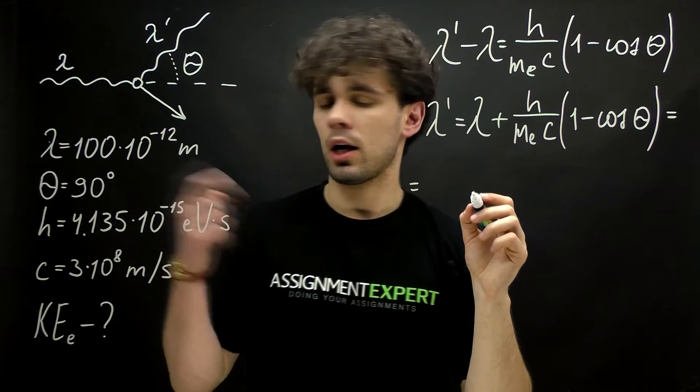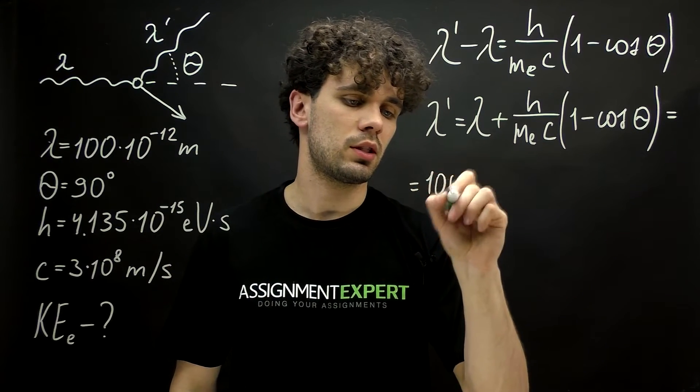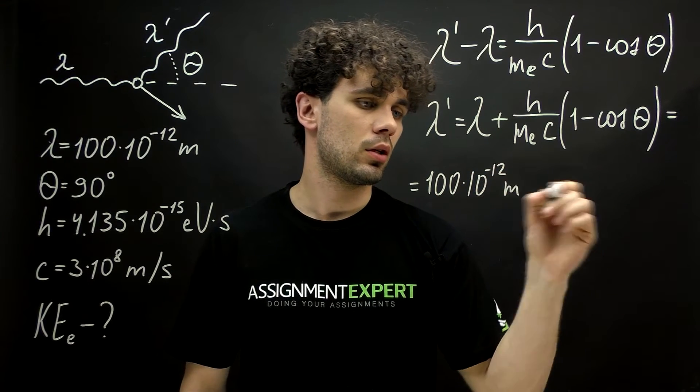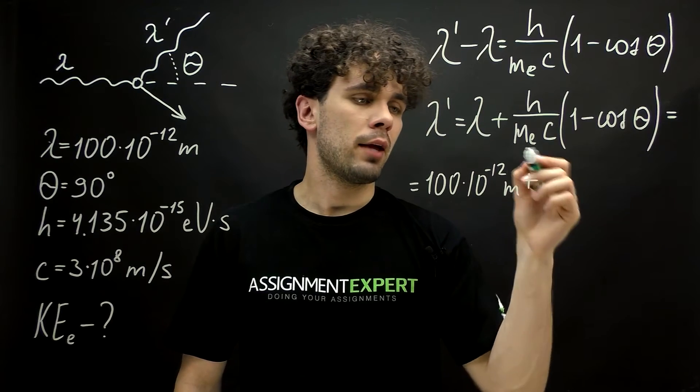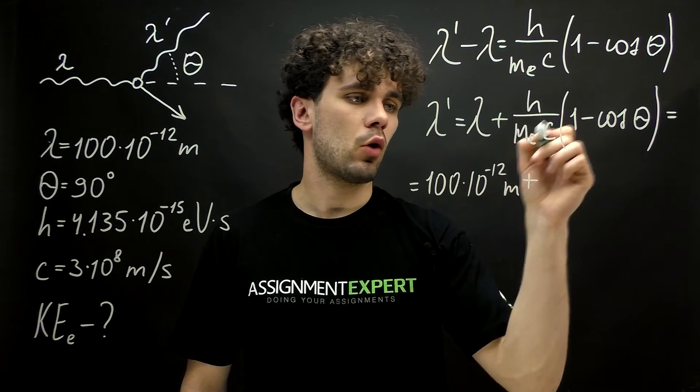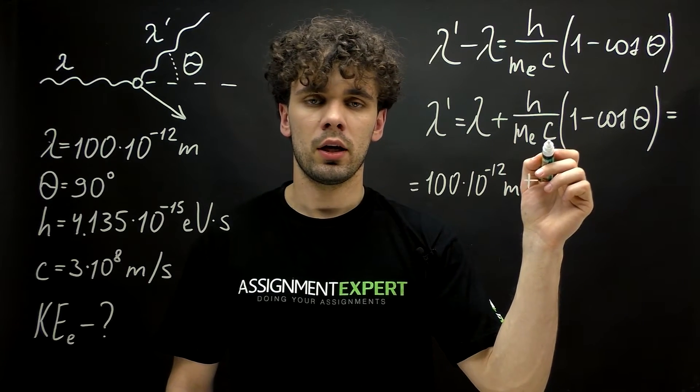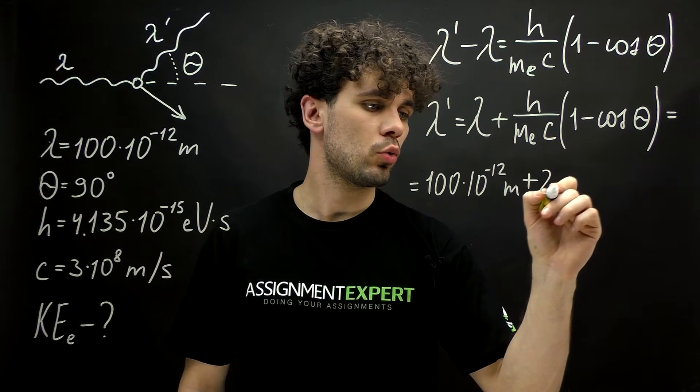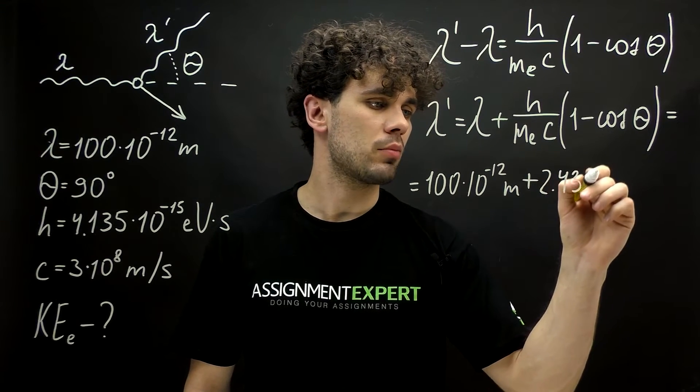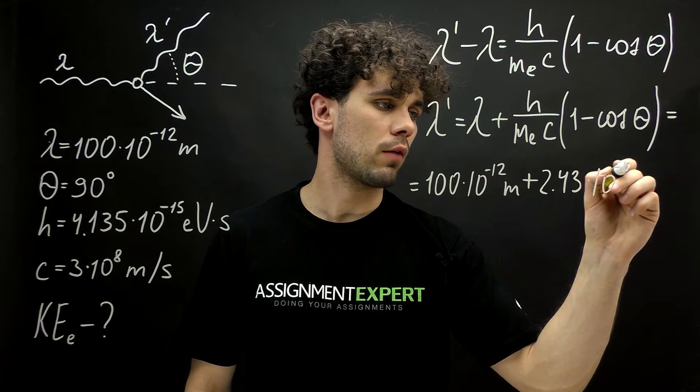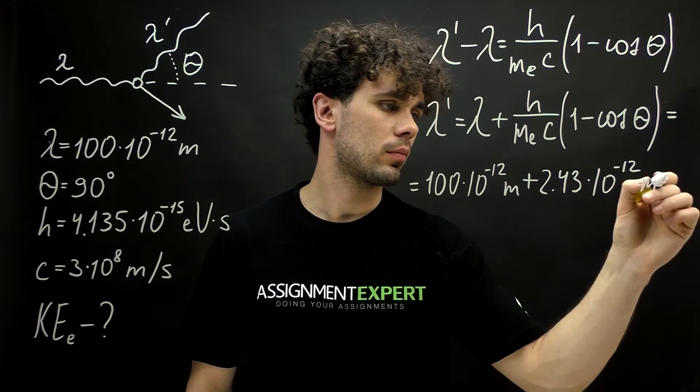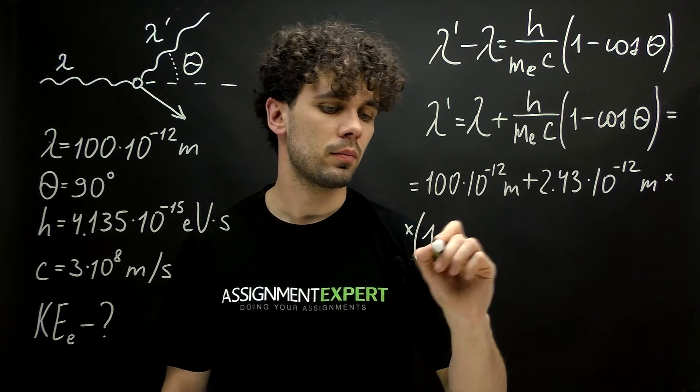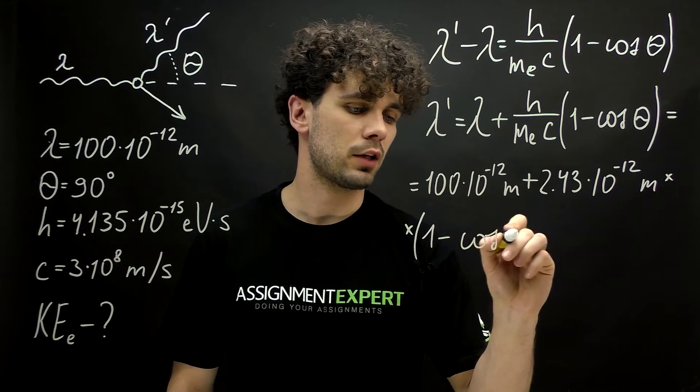And this is 100 times 10 raised to the negative 12 meters. And then we have this combination h over mE times c. It is called the Compton wavelength, and it is equal to 2.43 times 10 raised to the negative 12 meters. And in braces we have 1 minus cosine of 90 degrees.